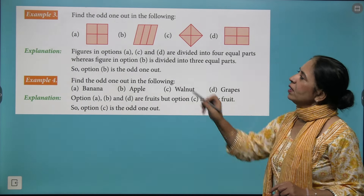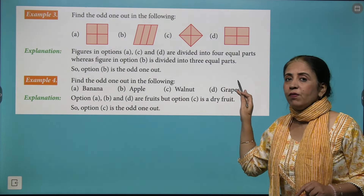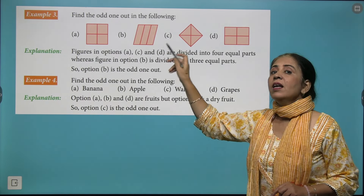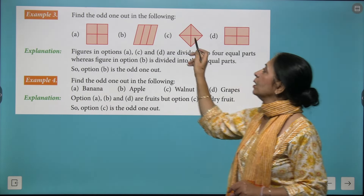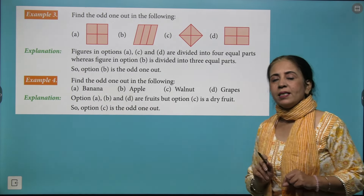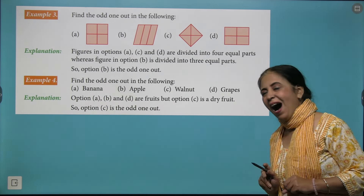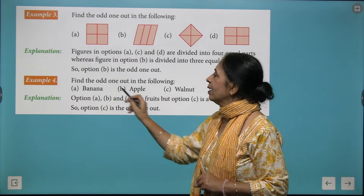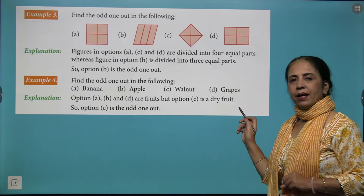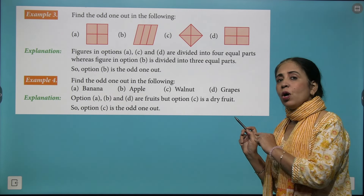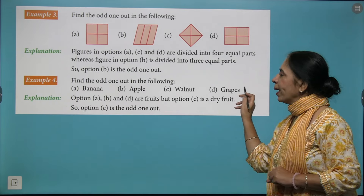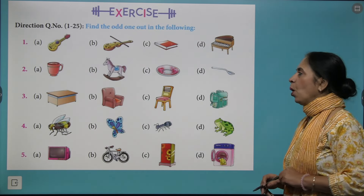Now look at these figures very carefully. The second figure is divided into three equal parts while the other four are divided into four equal parts, so figure B is the odd one out. Next: banana, apple, walnut, and grapes. Walnut is a dry fruit while the other three are fruits, so we pick out walnut as the odd one out.